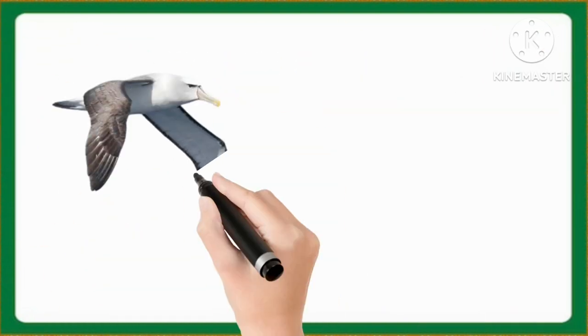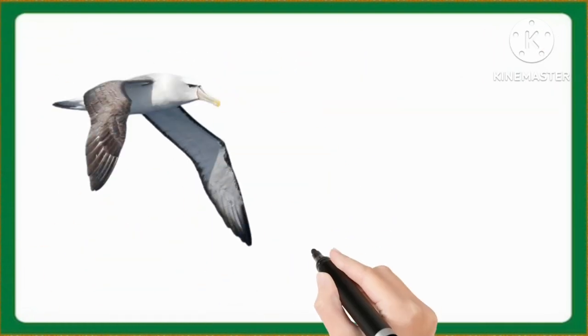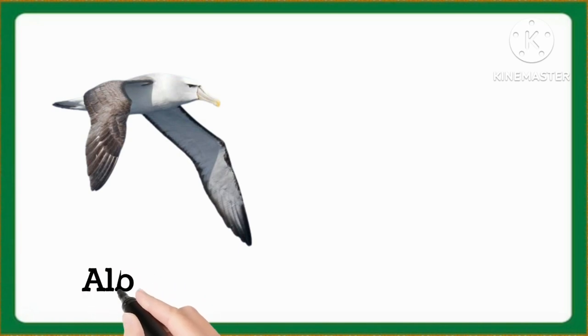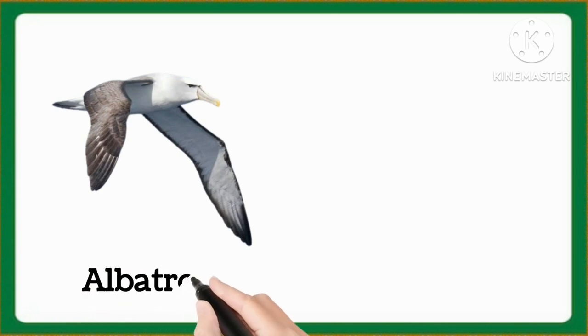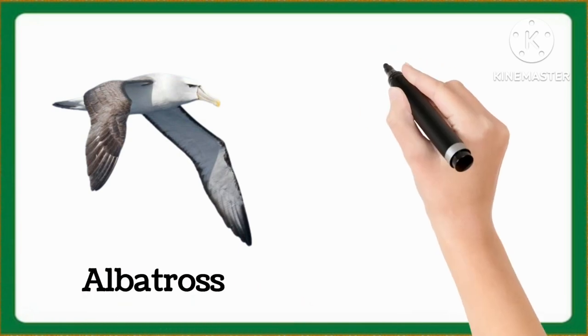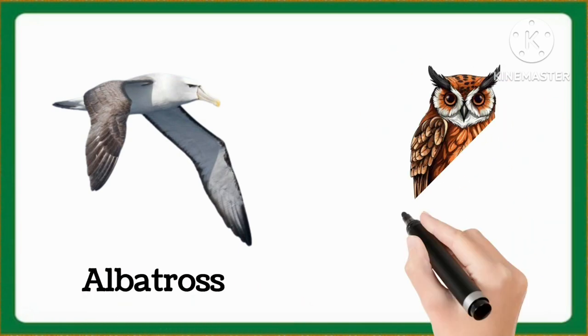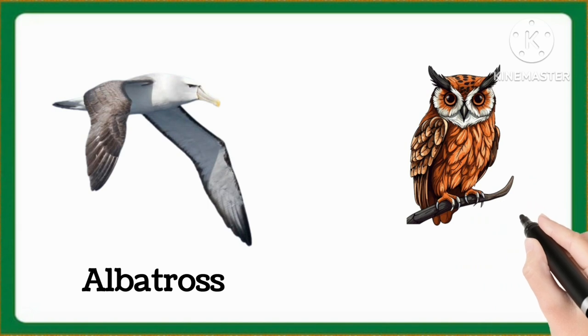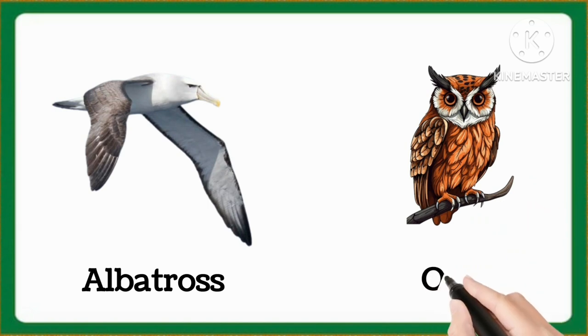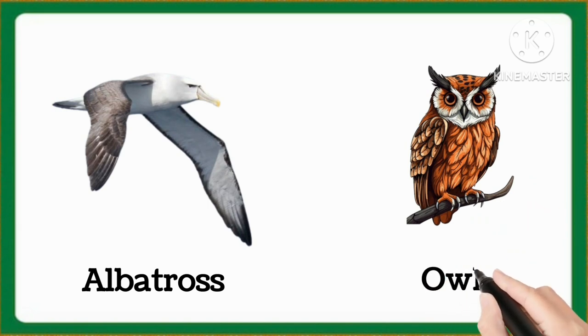And which word is this, kids? This is albatross. Albatross. And which word is this, kids? This is owl. Owl.